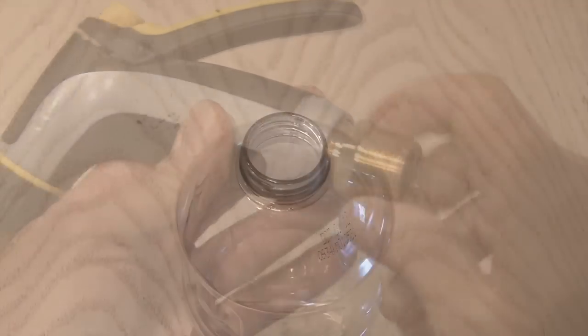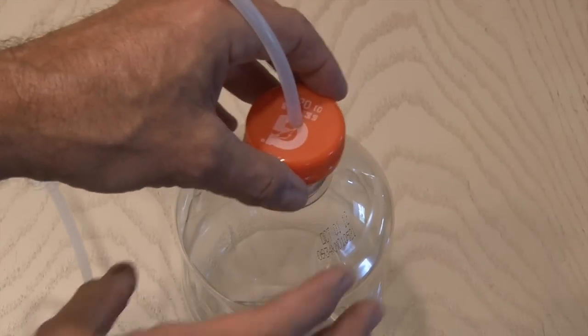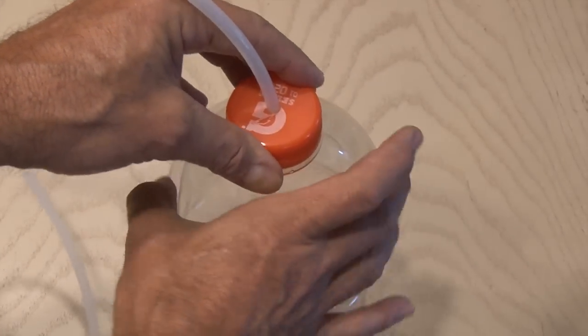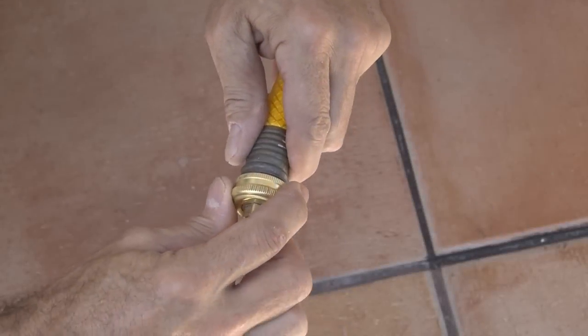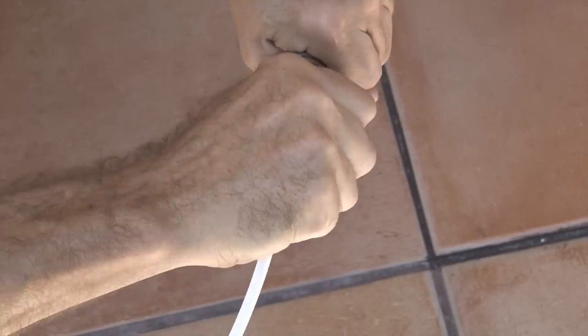Okay, here we go. Time to attach the cap with our feed line to our bottle. Make sure it's tight and let's head outside. Attach the other end of our feed line to a water hose and turn the water on.